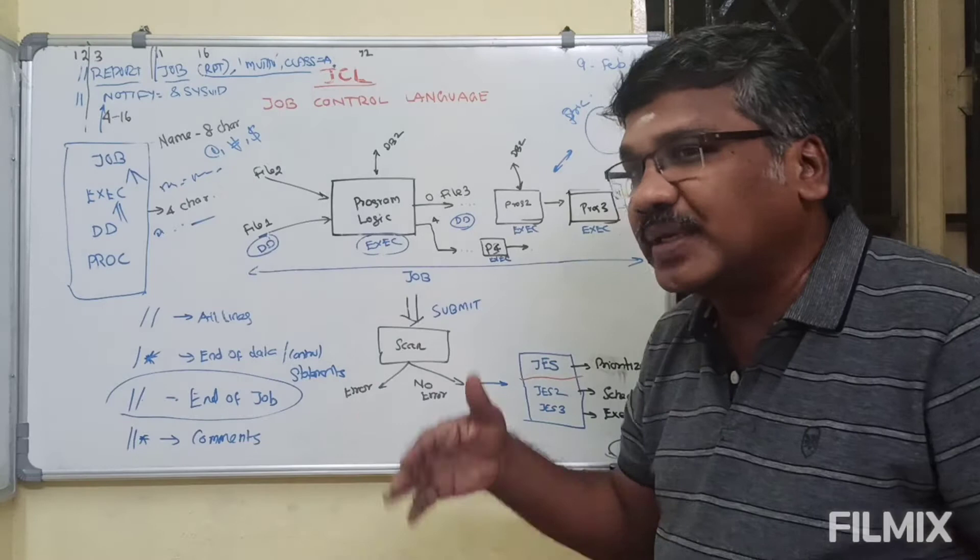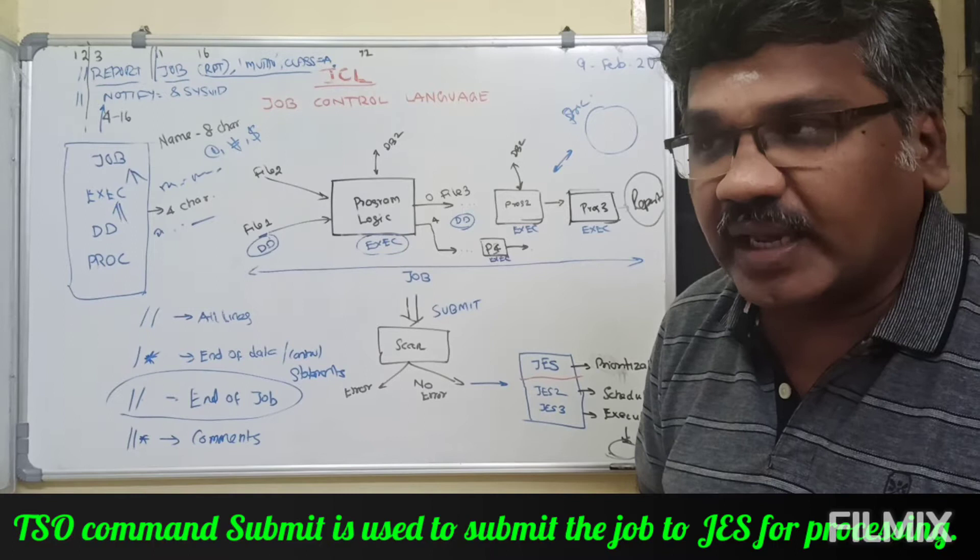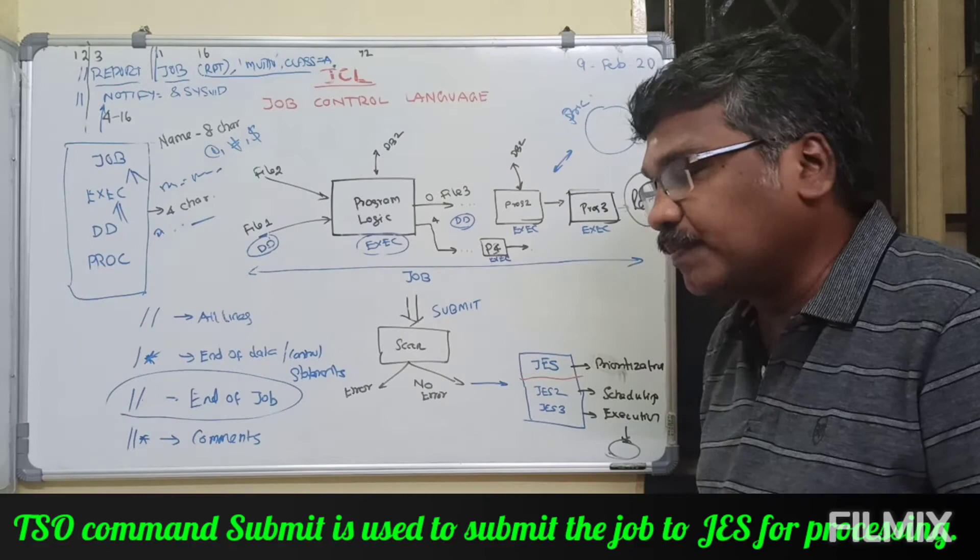Now assume that we have coded the job — then what will we do? We will submit the job because it has to get processed and executed. Using the submit statement we will submit it. Once you submit it, it will look for any errors, like syntax checks or something like that. If there are no errors, it will go for processing. JES will take care of processing.